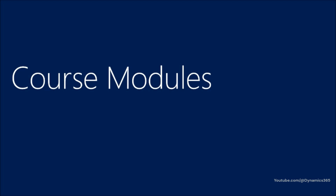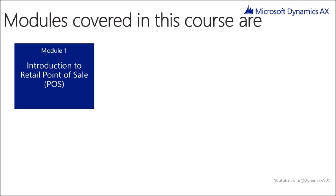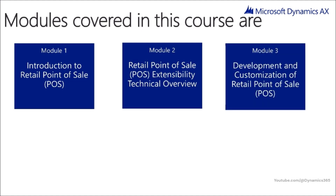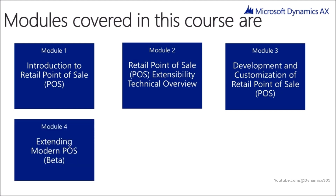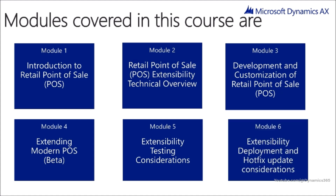We will now cover the modules in this course. The modules covered are: Module 1, Introduction to Retail Point of Sale; Module 2, Retail Point of Sale Extensibility Technical Overview; Module 3, Development and Customization of Retail Point of Sale; Module 4, Extending Modern POS — note this module is still in beta and further updates may be published; Module 5, Extensibility Testing Considerations; and Module 6, Extensibility Deployment and Hotfix Update Considerations.